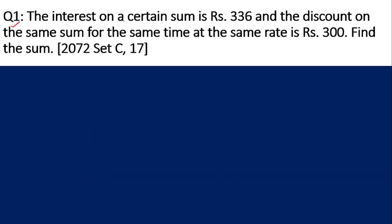Here is the first question: The interest on a certain sum is rupees 336 and the discount on the same sum for the same time at the same rate is rupees 300. Find the sum. In this chapter, when the word interest is used, you should understand it means banker's discount. And when just discount is written, you should understand it means true discount. So 336 is the banker's discount on a certain sum, which is the face value. On the same face value, when the banker calculates interest, it comes to 336. And on the same face value with the same time period and same rate, the true discount is 300.